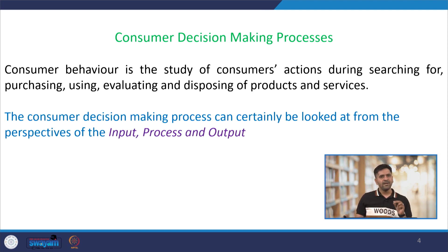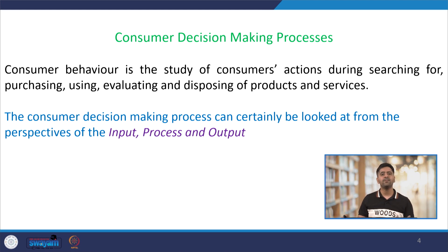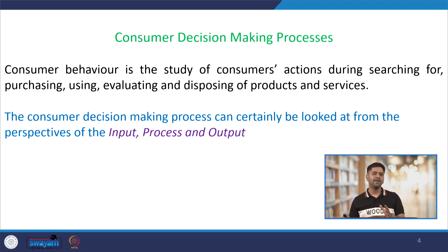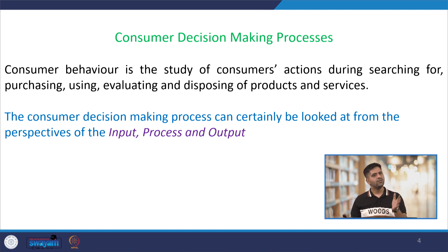Whenever we talk about consumer decision making processes, we are not just looking at why they buy certain products but also how they buy them. For some product categories, people make very extensive product information searches, but for others they will not. This can be aligned with extensive problem solving, limited problem solving, and routinized problem solving — which we will be talking about a lot as we move further.